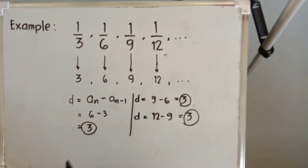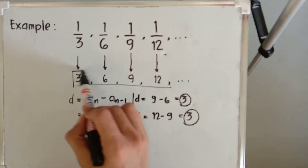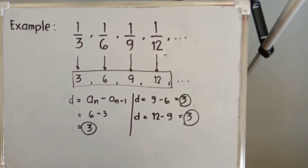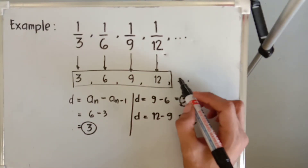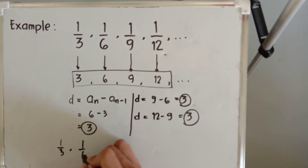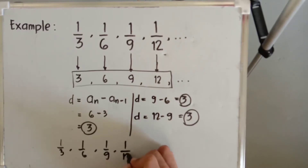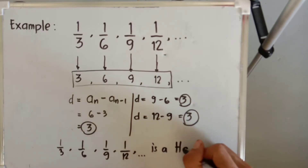Since the reciprocated terms have a common difference of three, we can say that this sequence is an arithmetic sequence. Therefore, since the reciprocated terms are in arithmetic sequence, we can say that one-third, one-sixth, one-ninth, one over twelve, and so on is a harmonic sequence.